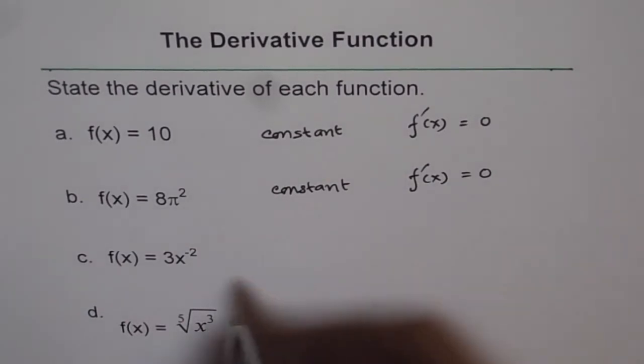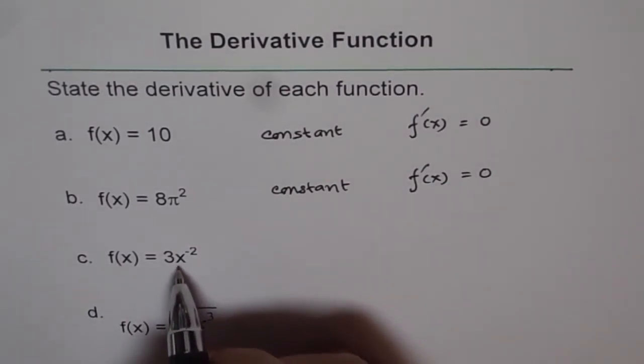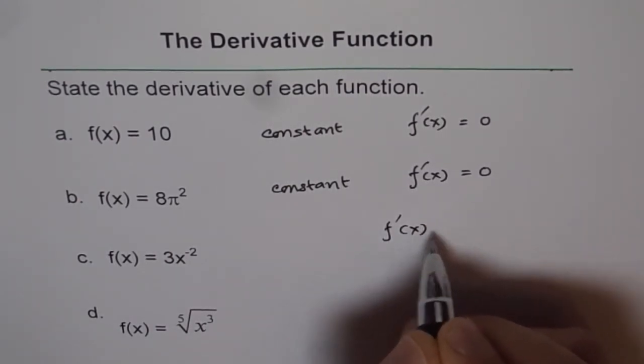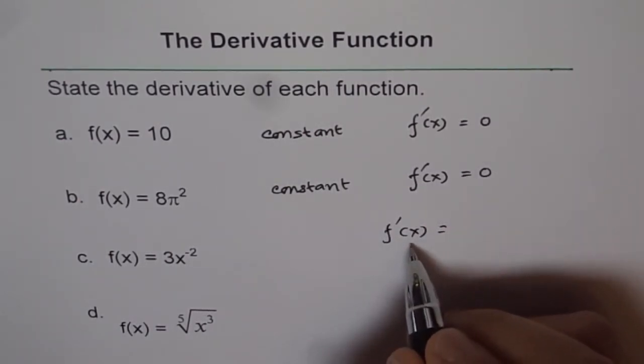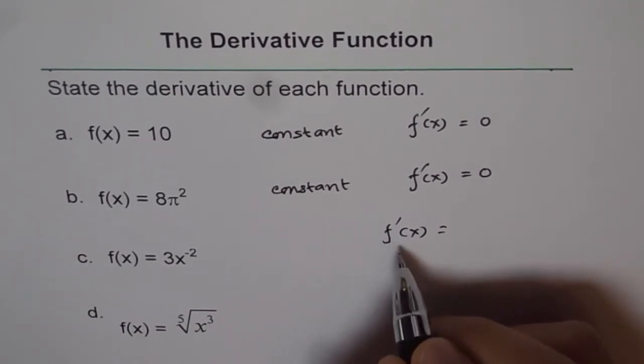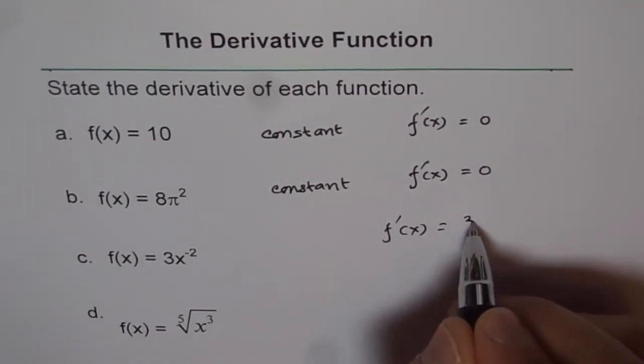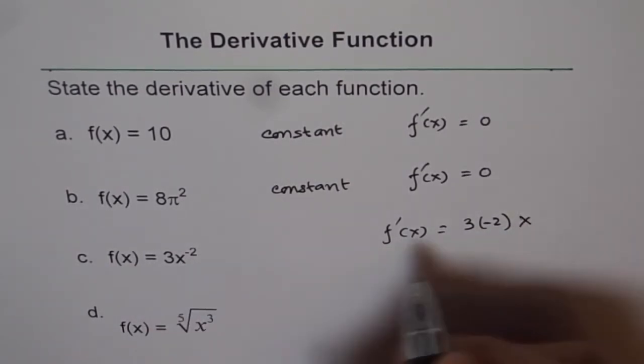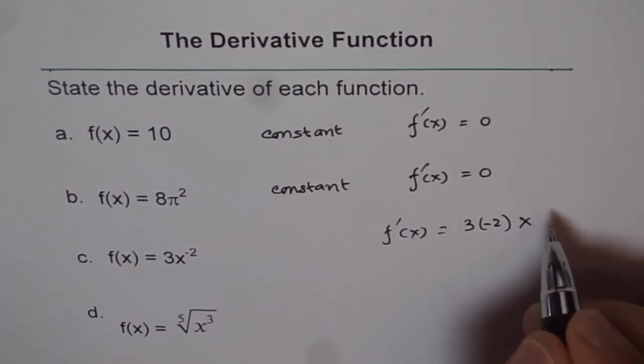Now here we have a function with x varies and the exponent is minus 2. So f dash of x, we say, or the derivative of the function, or f prime of x, is 3 times minus 2 times x to the power of minus 2 minus 1.